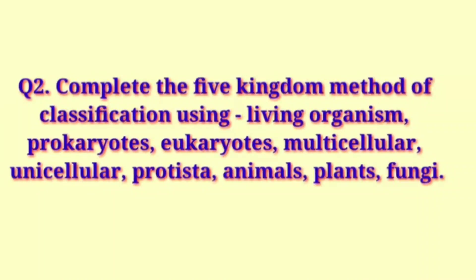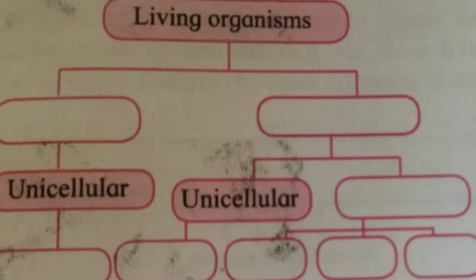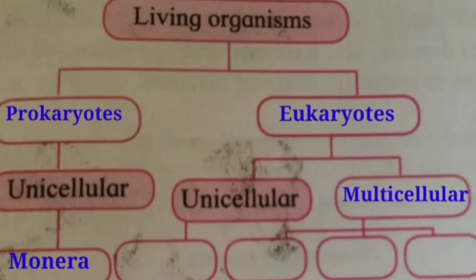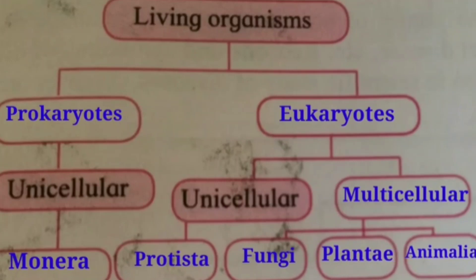Question 2: Complete the five Kingdom method of classification using — Living Organism, Prokaryotes, Eukaryotes, Multicellular, Unicellular, Protista, Animals, Plants, Fungi. There are two types of living organisms: Prokaryotes and Eukaryotes. Prokaryotes are unicellular, for example Monera. Eukaryotes are unicellular and multicellular, including Fungi, Plantae, and Animalia.